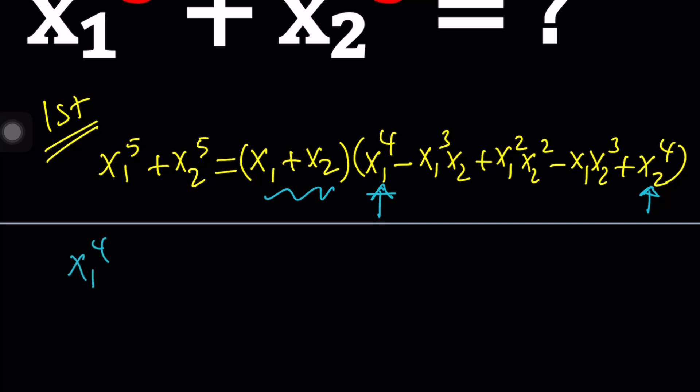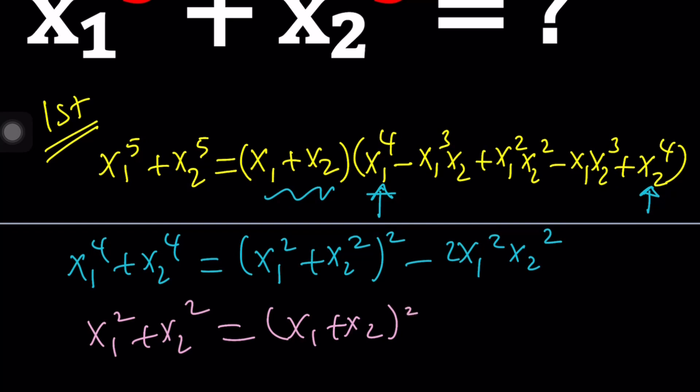So x1 to the fourth plus x2 to the fourth can be found by squaring the sum of two squares like this, but then you can subtract the term in the middle. But then this brings up another issue. We need to find the sum of the squares. And that can be found by using the sum and subtracting two x1 x2. Make sense? So far, so good.